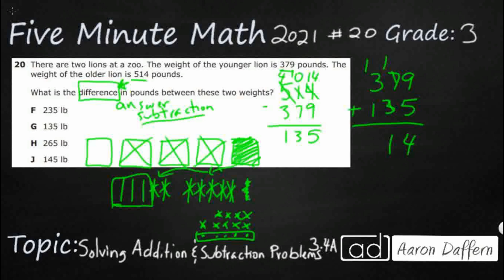And let's see. 1 and 3 is 4. 4 and 1 is 5. So there we go. So I get back up to my 514, which means my answer is going to be G, 135.